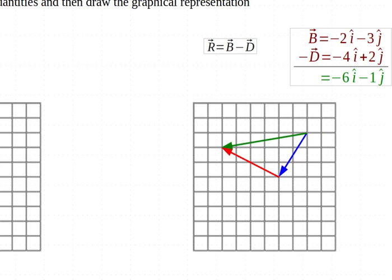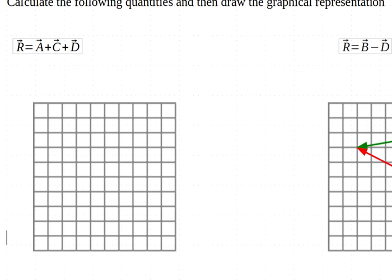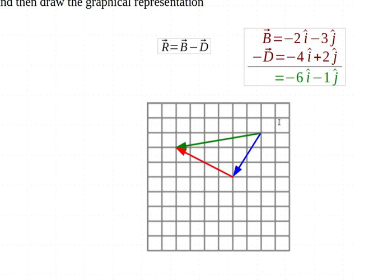I'll keep scrolling back over. So graphically this is B and negative D, and that gives me the result there.